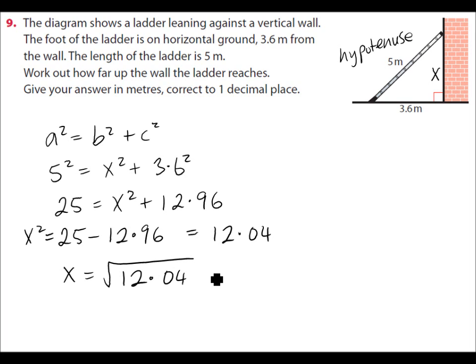Now this doesn't give us a very nice answer in the calculator. There's a number of decimal places to it. It's 3.469. But we only want it to one decimal place. So this rounds off to be 3.5. And it's in meters.